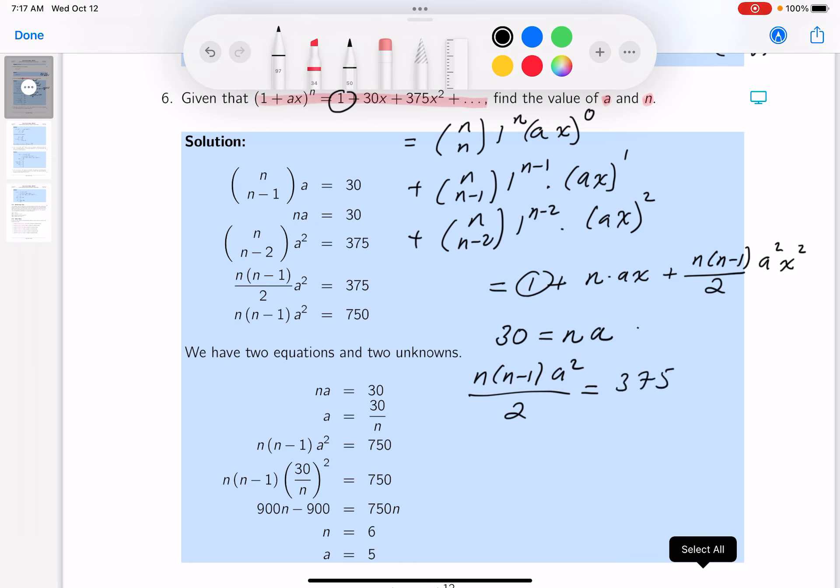All right, I'm going to take the first equation. There's two equations, two unknowns by the way. And I'm going to solve that for a. And what do you get? You would get 30 over n. I'm going to take this, plug it in here.